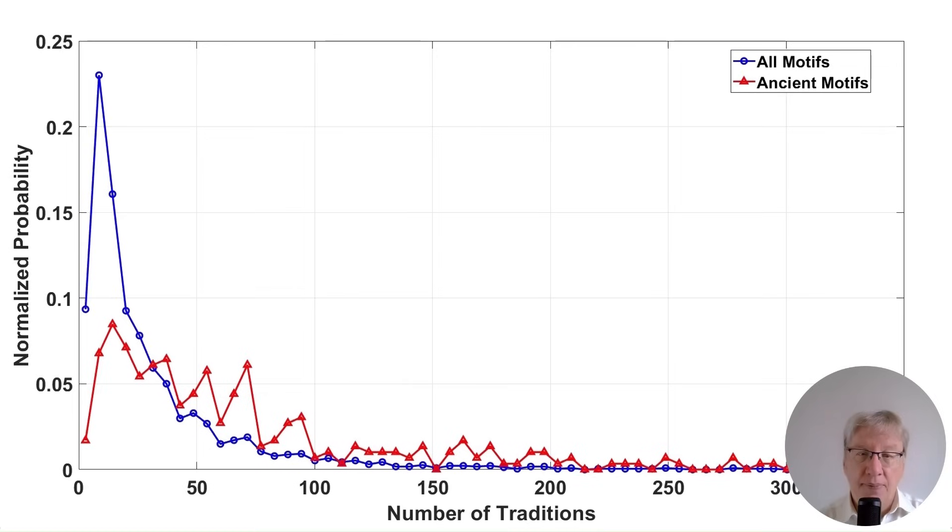The core assumption that we'll use is that the fundamental process of myth propagation was the same in the past as it is today. Therefore, if we could go back 2000 years and take a snapshot of all the myths existing at that moment, its distribution curve would have the same shape as the modern blue curve does today. The ancient red curve is what remains after two millennia, having filtered out the short-lived motifs from that original snapshot.